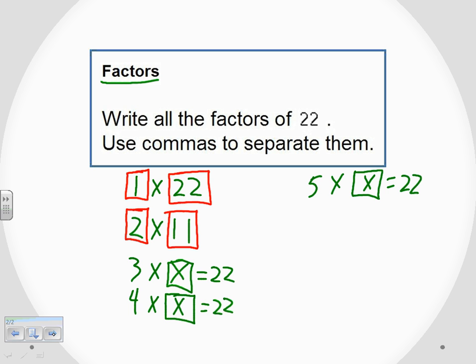We can keep going. We can try 6. 6 isn't going to work. 7, there's nothing I can multiply 7 by to give me 22. 8, 9, 10, none of them work. Actually, the next one that's going to work is 11. Because as we've said before, 11 times 2 does equal 22. But we've already got the 11 and the 2 listed over here.